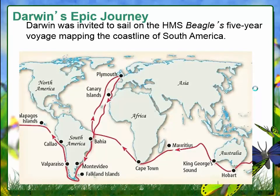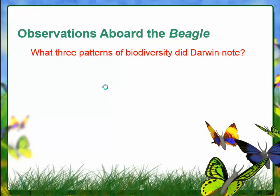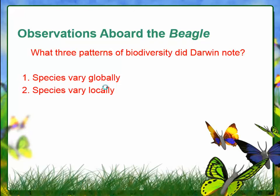This is a map showing Darwin's journey. He started in England and followed a route down below South America, past the Galapagos Islands, then continued his voyage around Cape Town and back up to England. On his voyage, he noticed three patterns of biodiversity: species vary globally, they vary locally, and they vary over time.